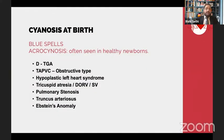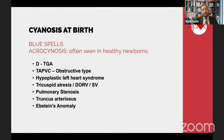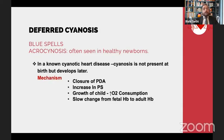The common causes of cyanosis differ at different age groups. As a DM candidate, you must know which conditions present with cyanosis at birth, after one week, after three months, or with delayed onset. More often than not, you will get a young child or adult with cyanotic heart disease in the examination. Causes of deferred cyanosis can include closure of PDA, increased intensity of pulmonary stenosis, or increased oxygen consumption due to growth.